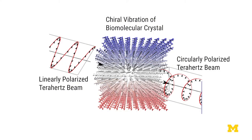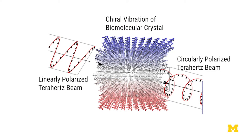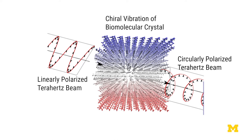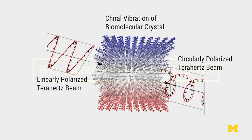If we shine the left helical light onto a left helical crystal, we have stronger absorption of that light. If it's of opposite helicity, it will absorb less.